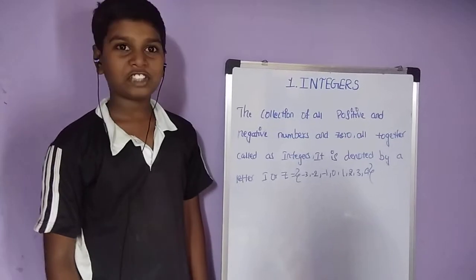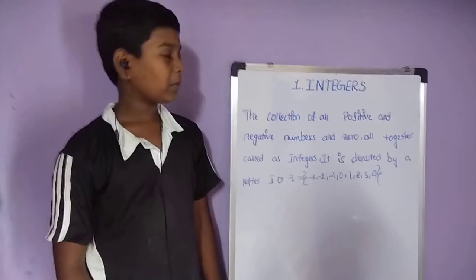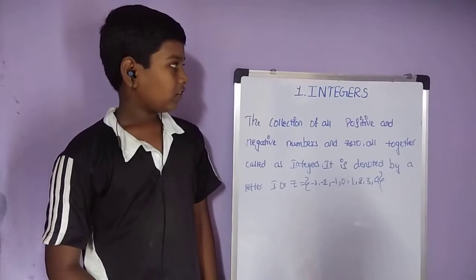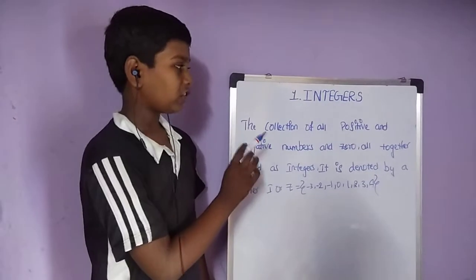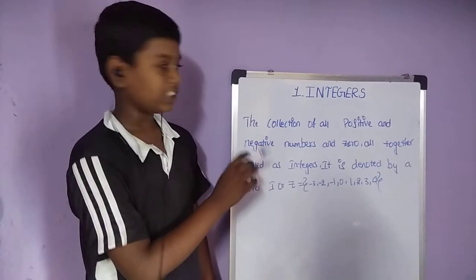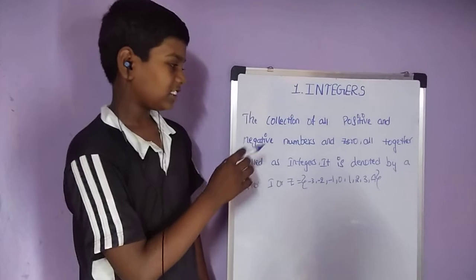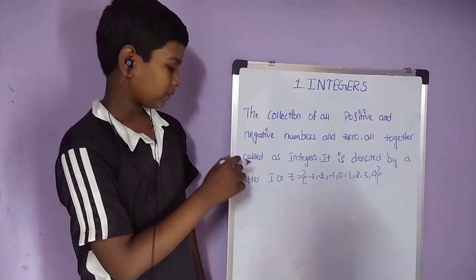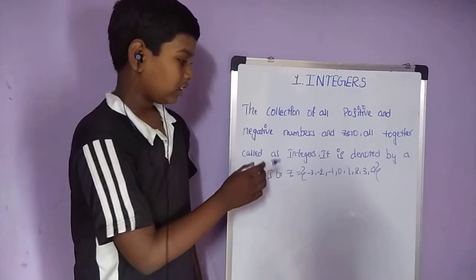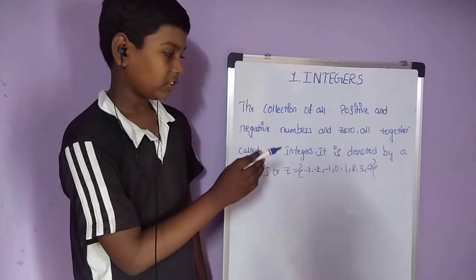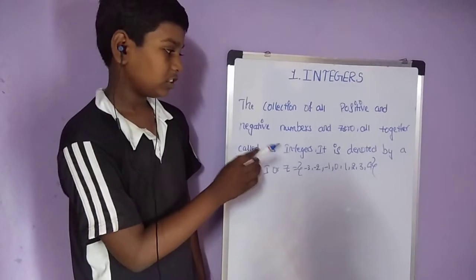Hello friends, welcome to KIT studies. Today we are learning about the chapter of integers. What are integers? The collection of all positive and negative numbers and 0 together is called integers. It is denoted by the letter I or Z: minus 3, minus 2, minus 1, 0, 1, 2, 3, 4.